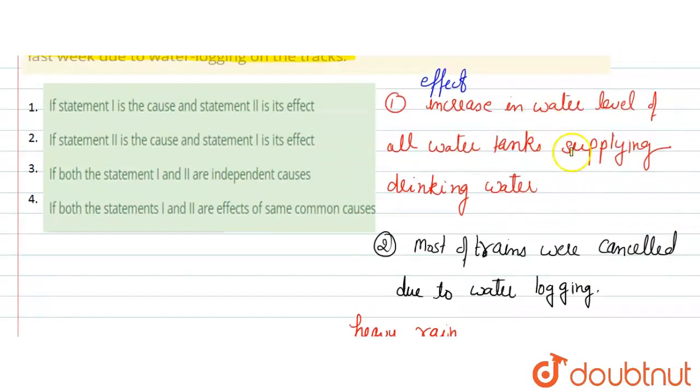Due to heavy rain, the water level in the drinking water tanks increased, and here heavy rain caused water logging. So both of these are effects.